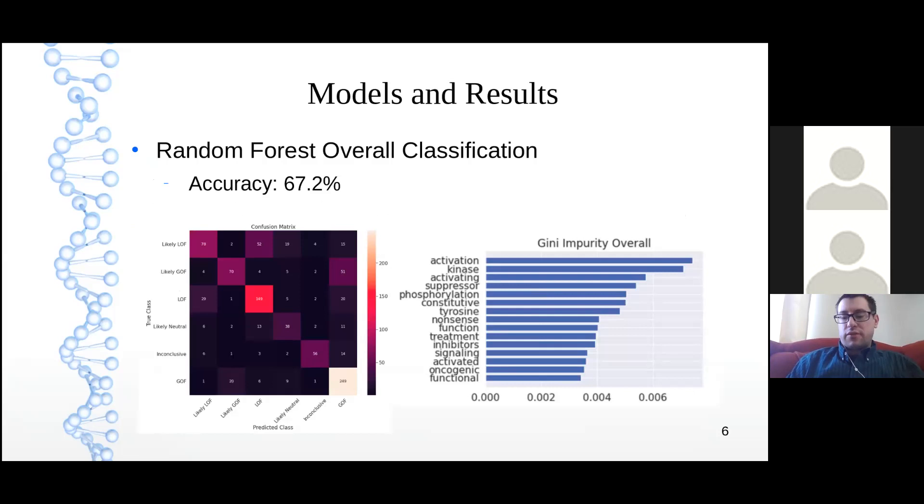I applied a random forest classification model to the entire dataset in all six classifications and achieved an accuracy of nearly 70%, which is pretty good for an NLP model. First, we'll look at the confusion matrix on the left side there, and that diagonal that runs from the upper left-hand corner to the lower right represents where the model predictions are correct. You can see that the large majority of the model's predictions are falling on that diagonal, which is what we want to see.